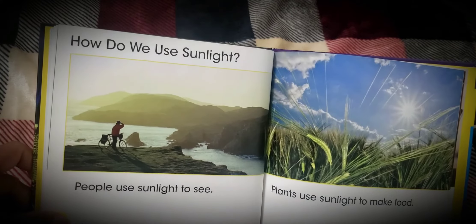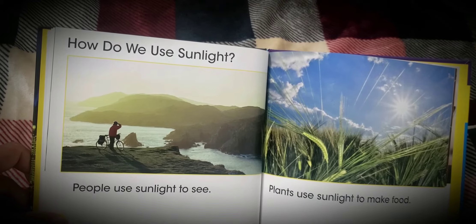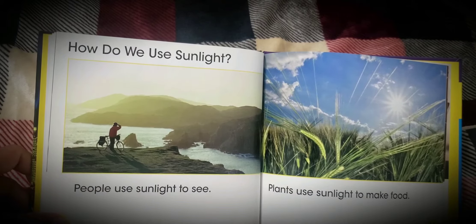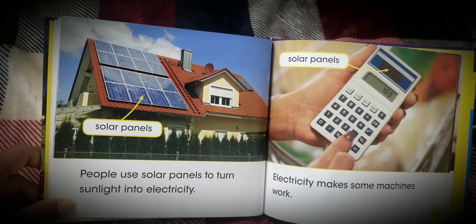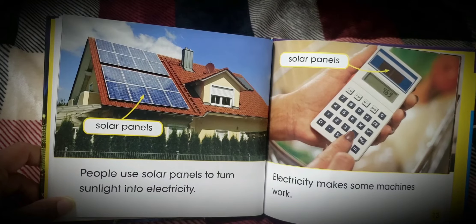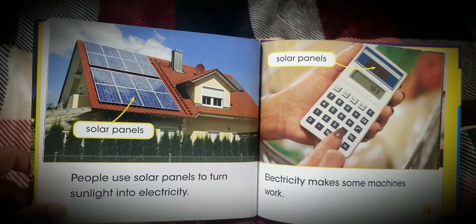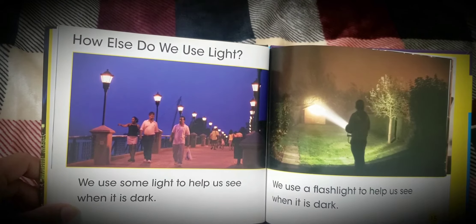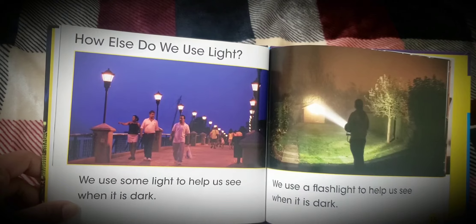How do we use sunlight? People use sunlight to see. Plants use sunlight to make food. People use solar panels to turn sunlight into electricity. Electricity makes some machines work.